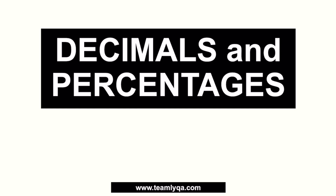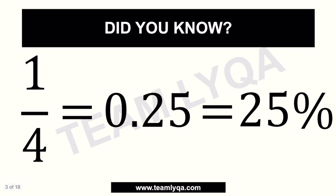Alright, let's start with our discussion. We're going to convert decimals into percentages and percentages into decimals. The first thing we have to understand is that when it comes to fractions, decimals, and percentages, they are equivalent — one-fourth is the same as 0.25, and 0.25 is 25%. You can think of it as another way of writing the same figure.